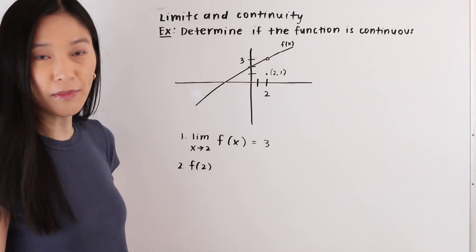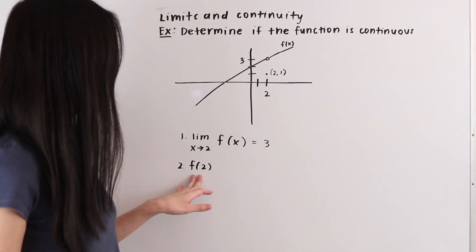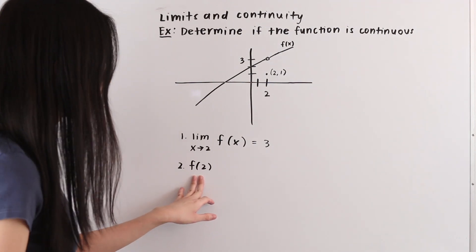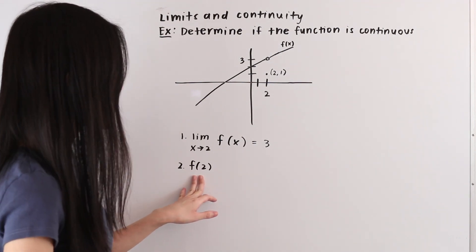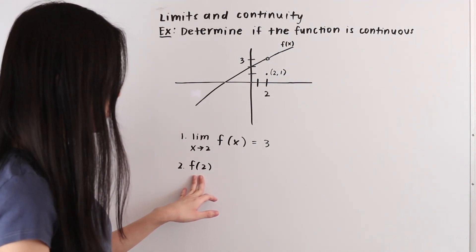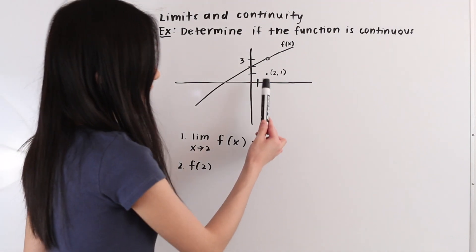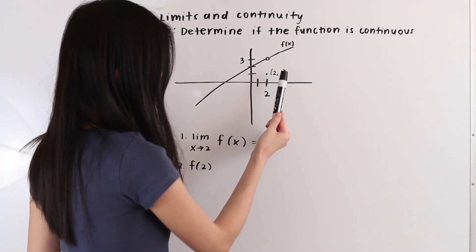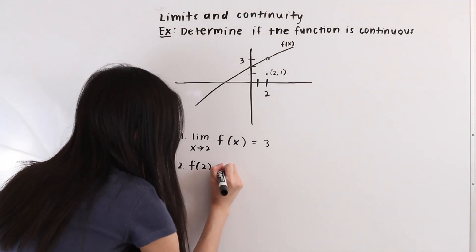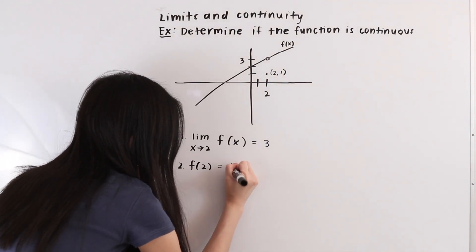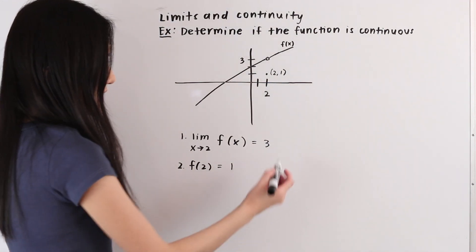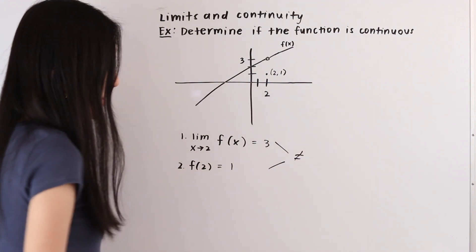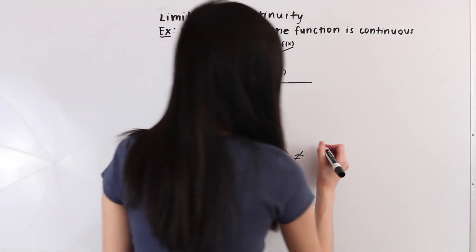As our next step, we need to determine what f(2) is equal to — that means figuring out what y value corresponds to x equals two. Taking a look at our graph, we can see that the x value of two corresponds to a y value of one. So f(2) is equal to one. From here, we can see that the limit and f(2) are not equal to each other, and so f(x) is not continuous.